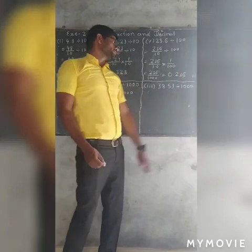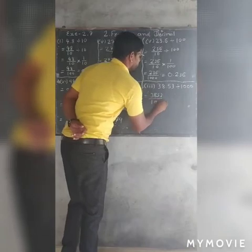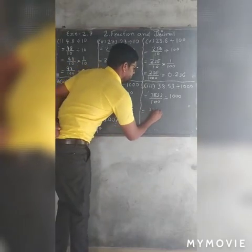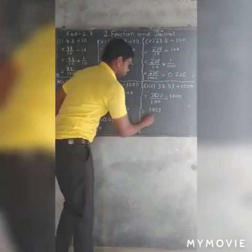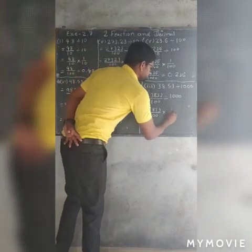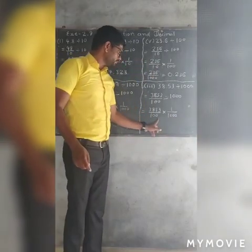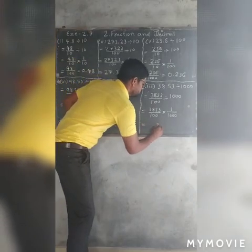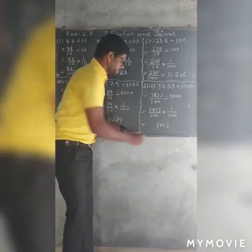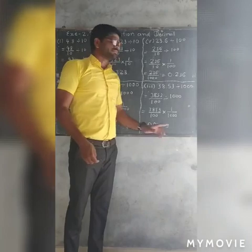Now, divided by 1000. First, move into fraction: 3853 over 100, divided by 1000. Multiply by the reciprocal of 1000. Now counting zeros: 1, 2, 3, 4, 5. Write down 3853, now counting 1, 2, 3, 4, 0. The answer is 0.03853.